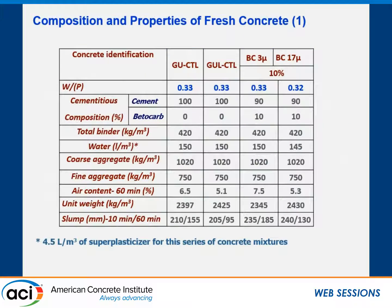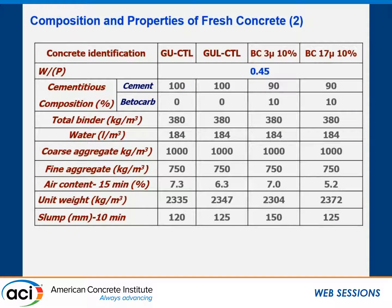He ran the study at a water-to-powder ratio of 0.33 for GU versus GUL, then took the GU and replaced 10% with the 3-micron and 17-micron limestone. The mix designs show the aggregate, air content, unit weight, and slump obtained. Every time he added limestone filler, he kept the slump within plus or minus one inch of target without cutting water, though cutting water would have produced higher strength.